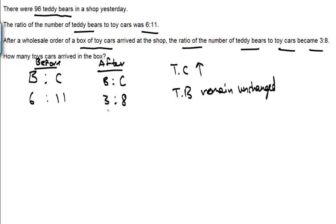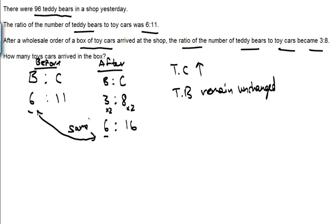Since the teddy bears have to remain unchanged — 6 units before and 3 units after — we multiply the second ratio by 2 to get 6 to 16. Now the teddy bear units match. You can see the number of toy cars increasing from 11 to 16 units.